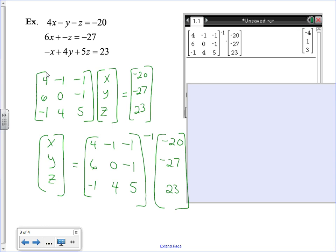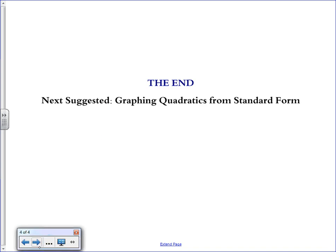And we can write it as an ordered pair: negative 4, 1, and 3. And you can always plug in your X, Y, Z values to the original equations to check if that works. And that is all.